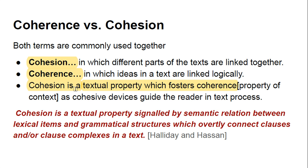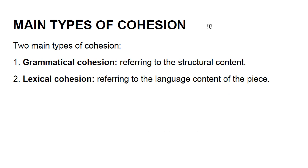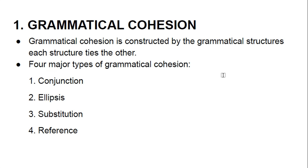Halliday and Hasan say that cohesion is a textual property signaled by semantic relations between lexical items and grammatical structures which overtly connect clauses and clause complexes in a text. Moving towards the main types: there are two main types — grammatical cohesion and lexical cohesion. Grammatical cohesion refers to the structural content of a text, whereas lexical cohesion refers to the language content.